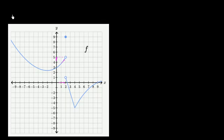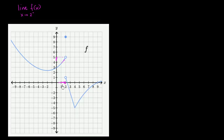The way we denote that is: the limit of f of x as x approaches 2, and we specify the direction — as x approaches 2 from the negative direction. We put a negative superscript after the 2 to denote the direction. This is not negative 2; we're approaching 2 from values less than 2, getting closer and closer from below: 1.9, 1.99, 1.99999. As x gets closer and closer to 2 from those values, f of x is approaching 5.